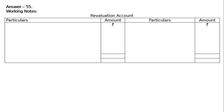Revaluation account — minimal format. A provision for doubtful debts at the rate of 10% was to be made on sundry debtors of rupees 50,000 — this is an increase in liability. Creditors were written back by rupees 5,000 — this is a decrease in liability, so it is income for the firm.